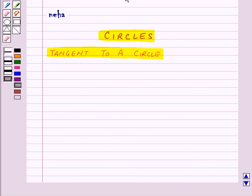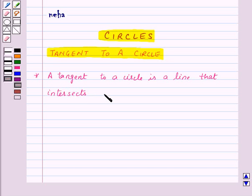By this we conclude that a tangent to a circle is a line that intersects the circle at only one point.